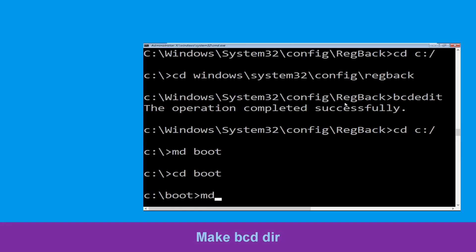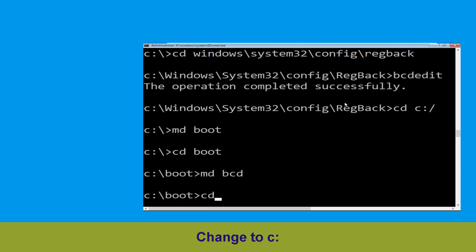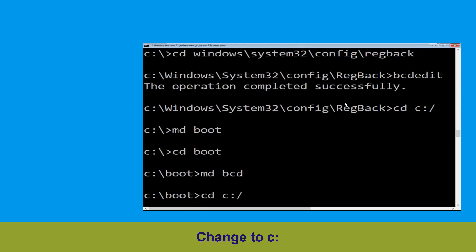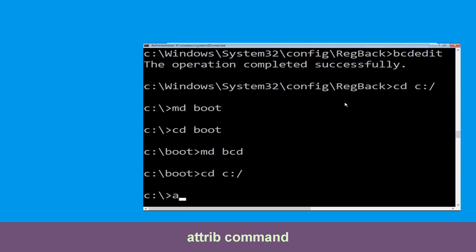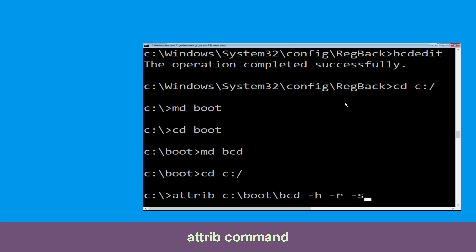Now type md bcd and hit enter. Now type cd c:\ and simply hit enter. Now execute this command: type attrib c:\boot\bcd -h -r -s and simply hit enter.